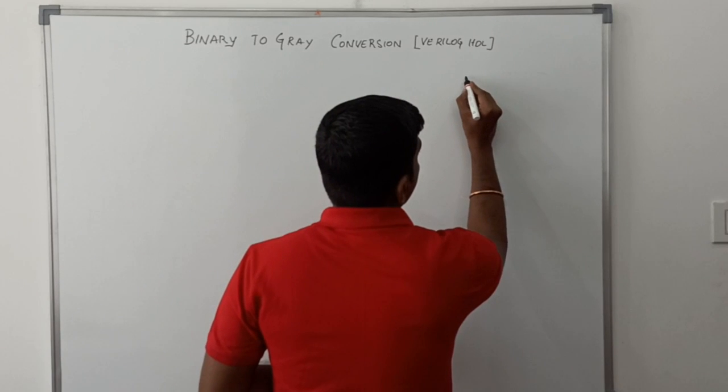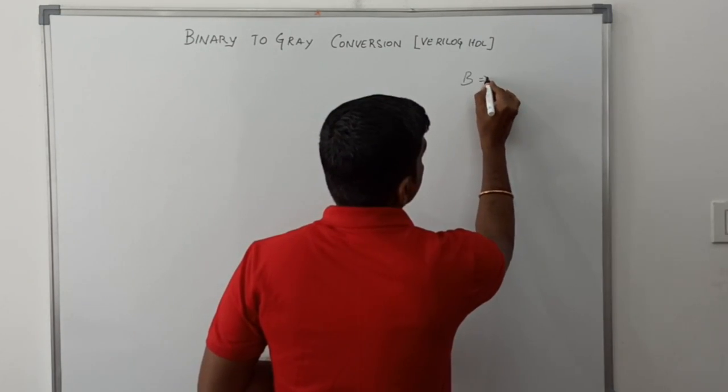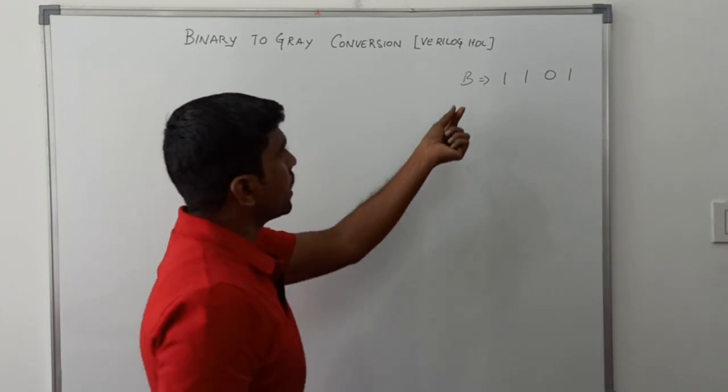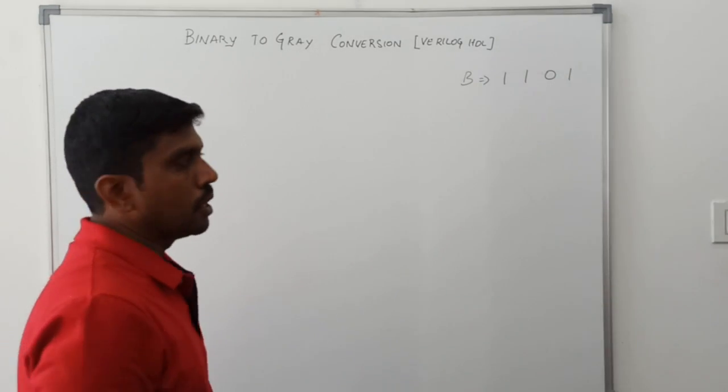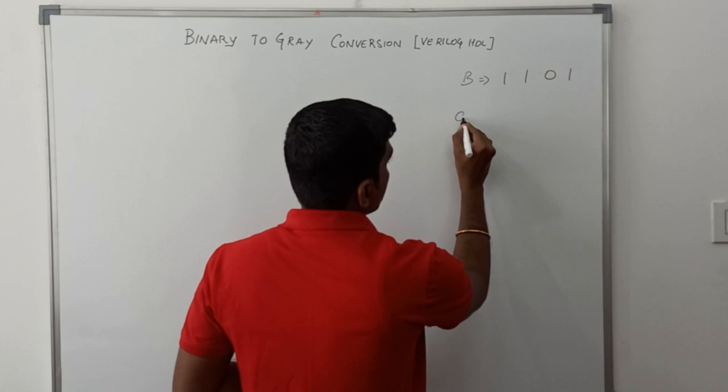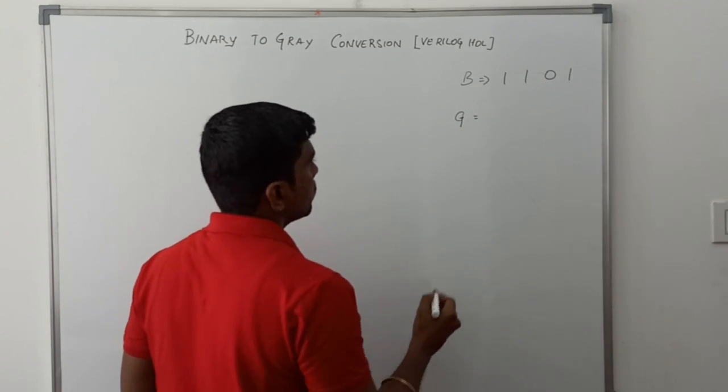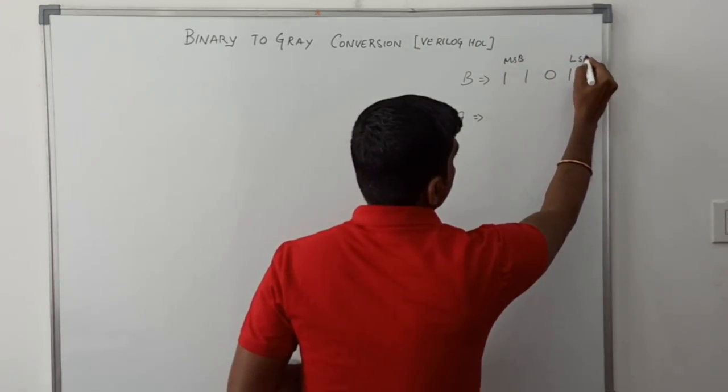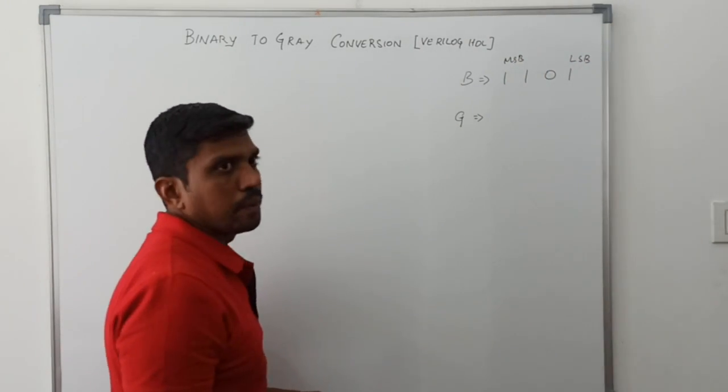Let us consider the binary number 1101. This binary number will be converted into gray code, where G represents gray. This is the MSB bit, and this is called the LSB bit.